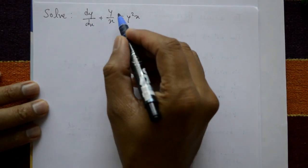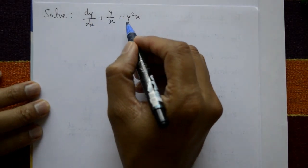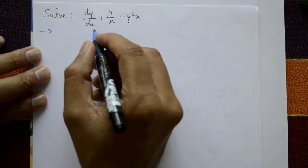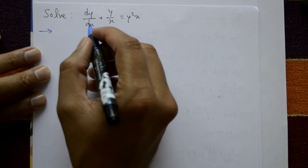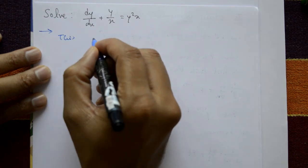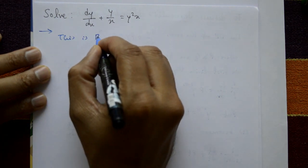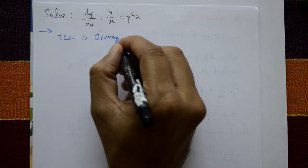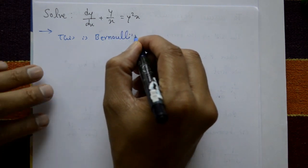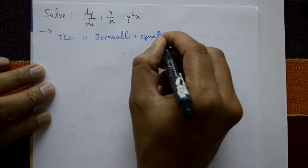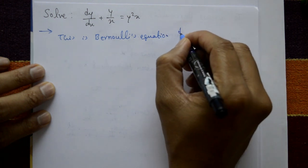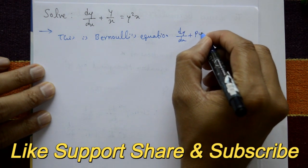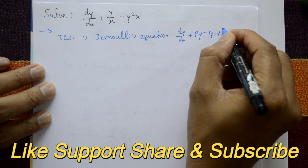Solve dy/dx + y/x = y²/x. Now this is a Bernoulli's equation. Generally, Bernoulli's equation is dy/dx + Py = Q·y^n.